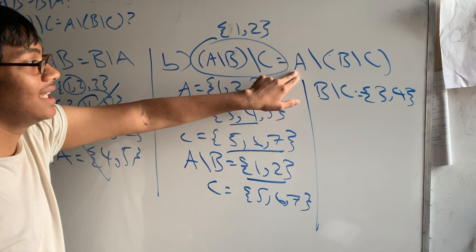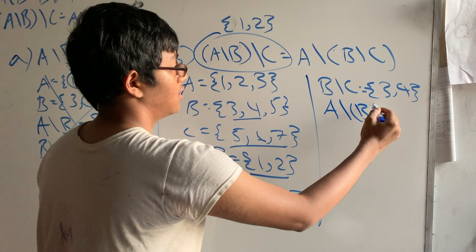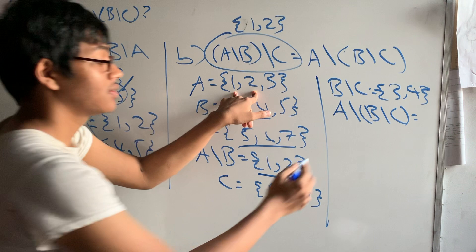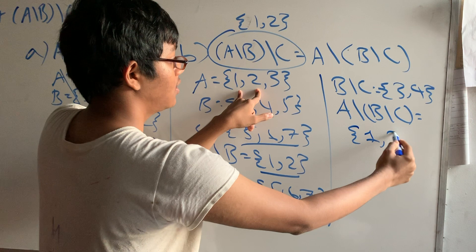And now we're going to find the difference of set A and (B-C). So this is going to be what is set A. Set A is {1, 2, 3}. 1 and 2 are in set A. So the difference of set A and (B-C) is going to be {1, 2}.